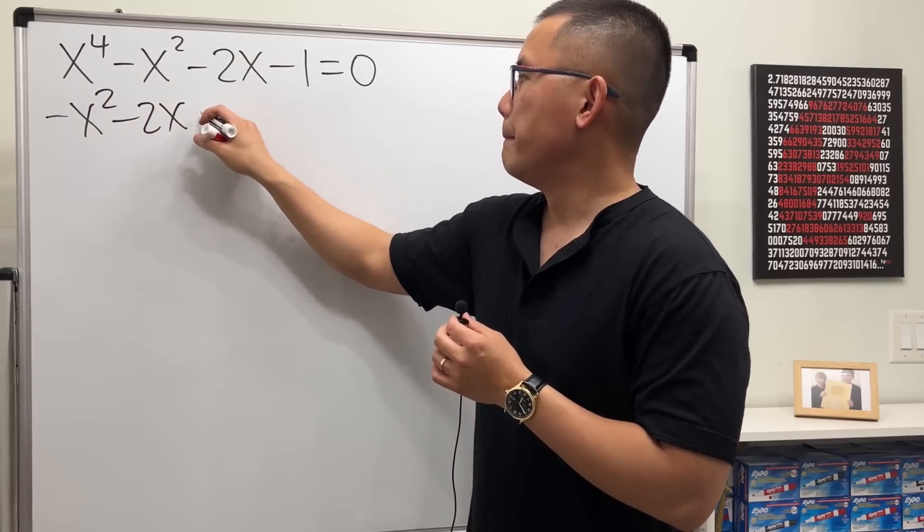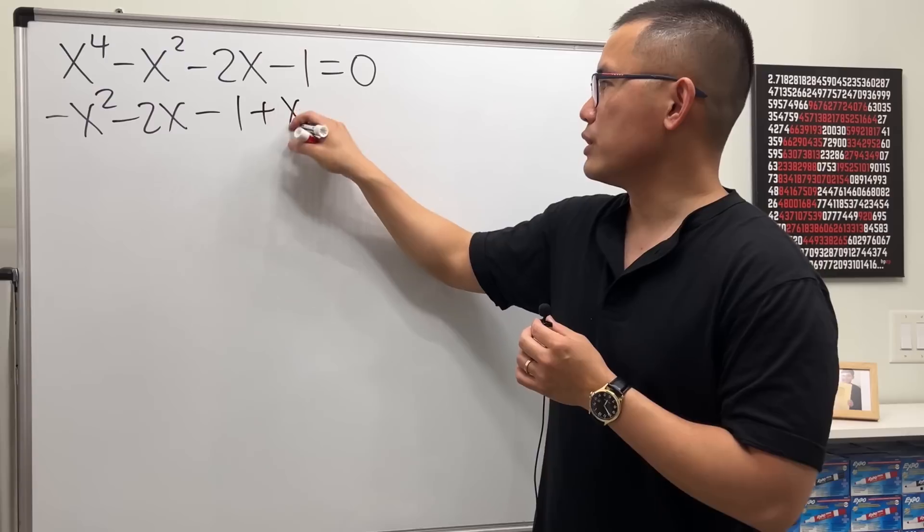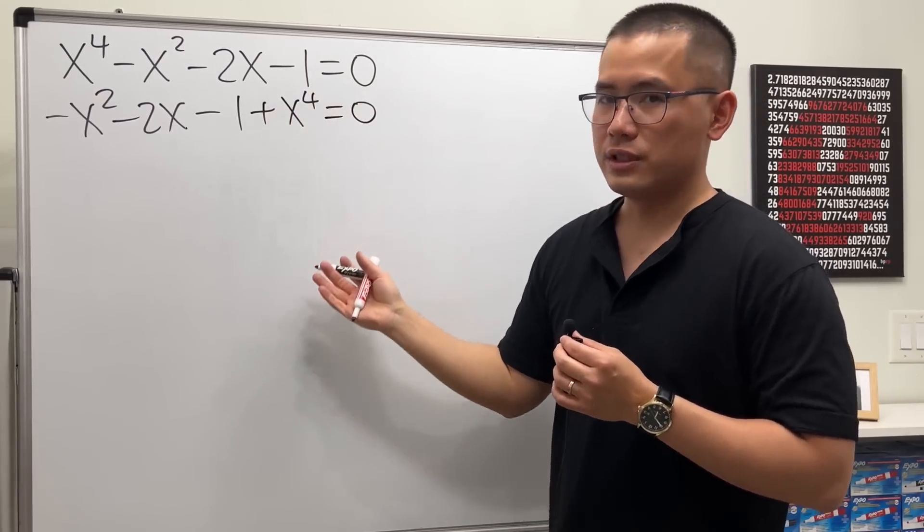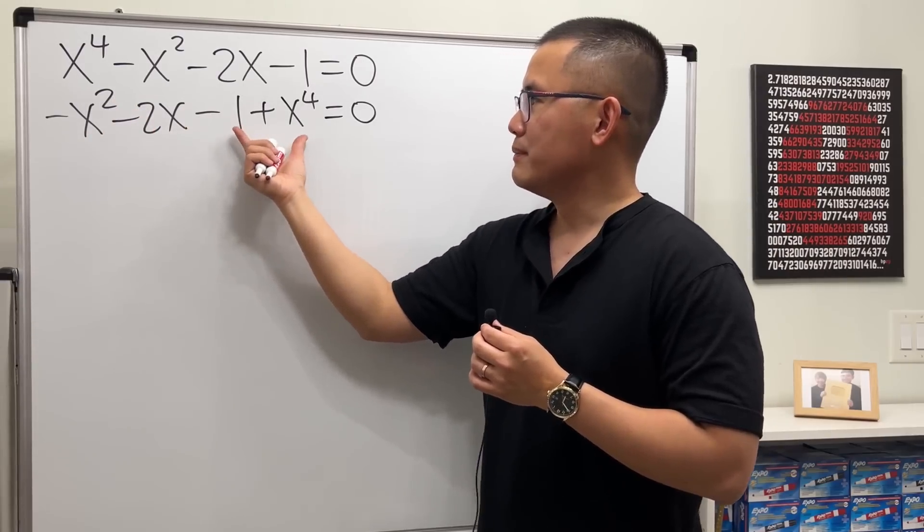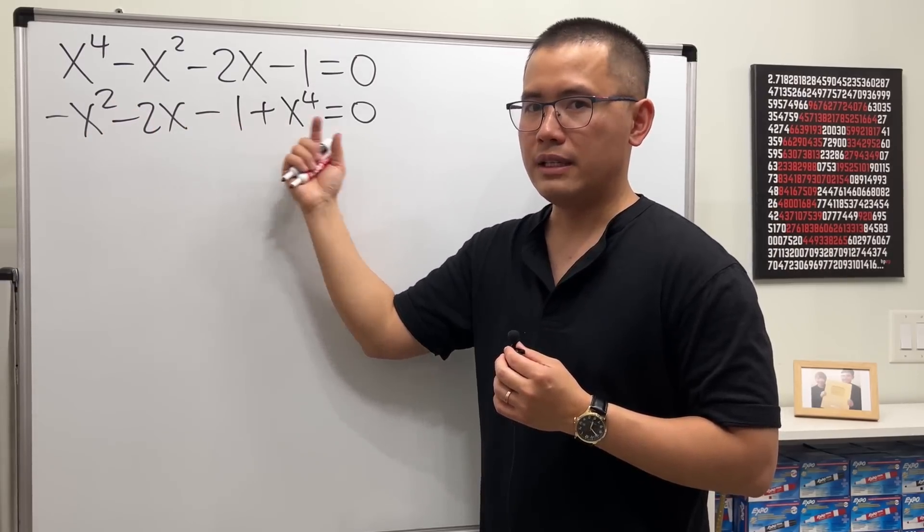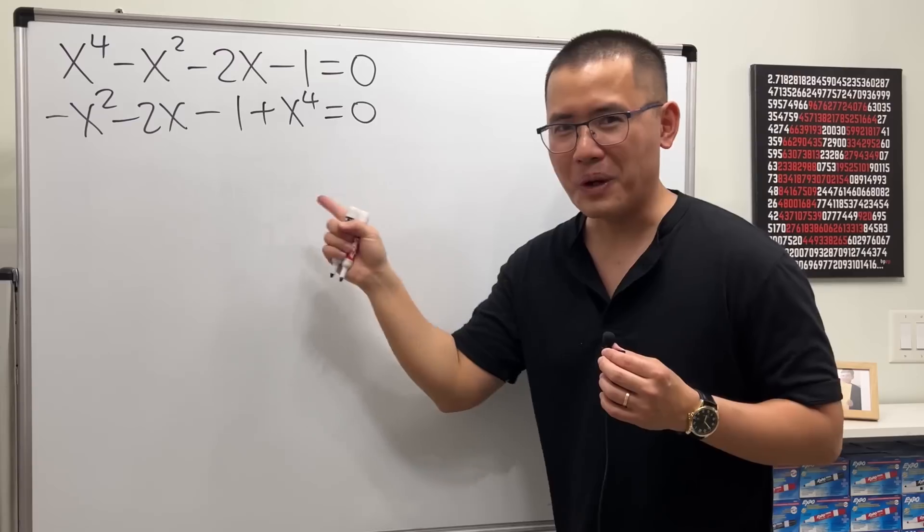So we are looking at negative x squared minus two x minus one and then plus x to the fourth power, of course that's equal to zero. Treat x squared plus 2x plus 1 as c and then equal to zero. Yes, we can use the quadratic formula for this.